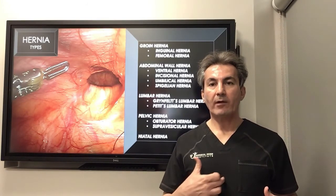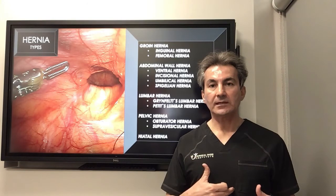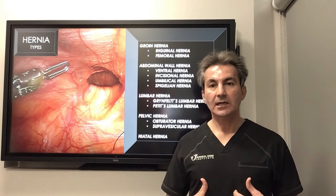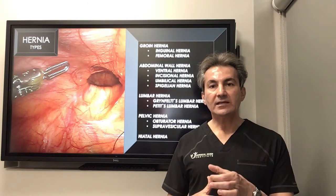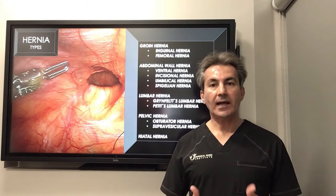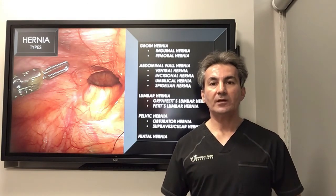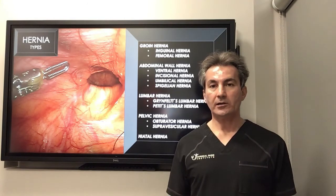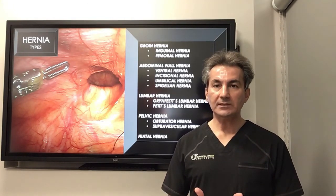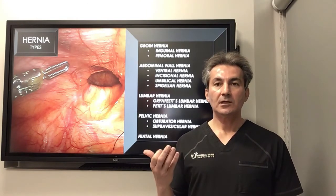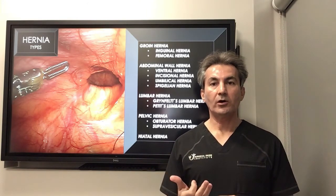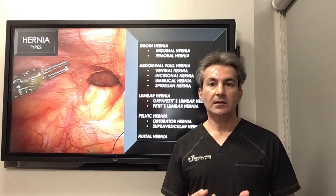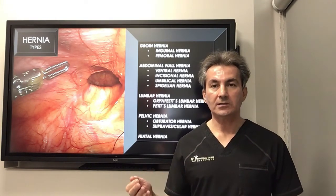We also have diaphragmatic hernia, which is very common around the esophagus area where the esophagus penetrates from the chest into the abdominal cavity. Sometimes there is a weakness of the muscles around that area, allowing intra-abdominal structures to protrude internally — this is called a hiatal hernia. For the purpose of this talk, we focus on groin hernia — inguinal and femoral — as well as abdominal wall hernia, which includes ventral hernia and incisional hernia.